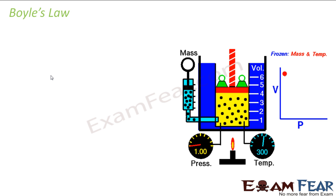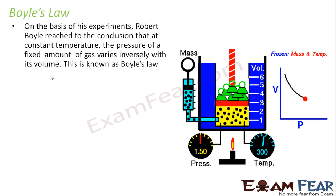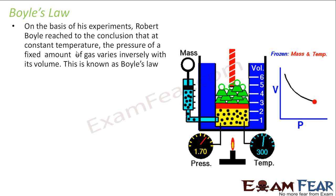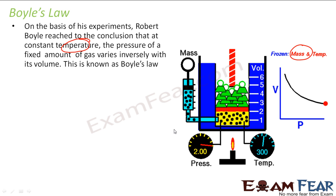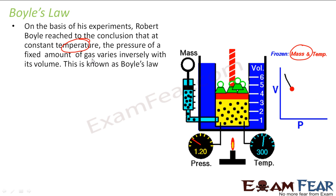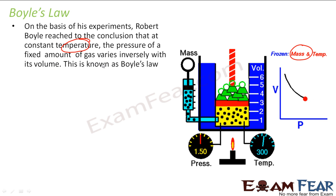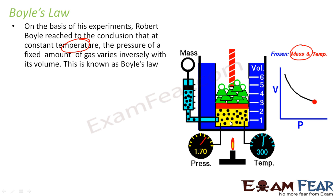Let's start with Boyle's law. Based on his experiment, Robert Boyle reached the conclusion that at constant temperature — note that temperature is constant — and also the mass of the gas is constant, the pressure of a fixed amount of gas is inversely proportional to its volume. The number of molecules (dots) is constant.